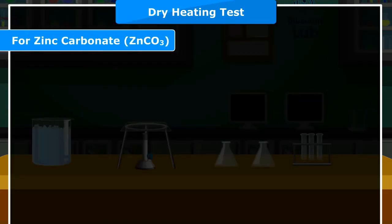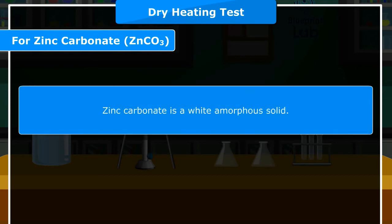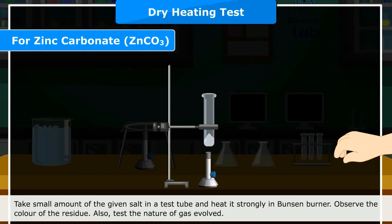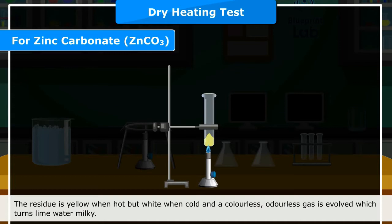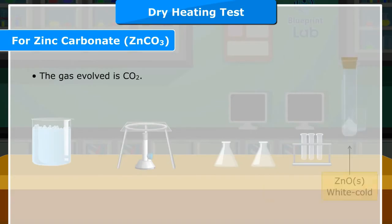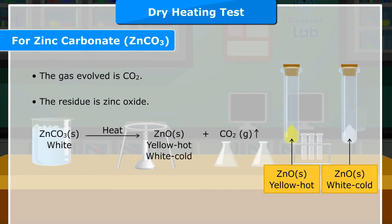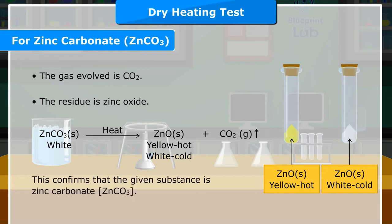For Zinc Carbonate (ZnCO3): Zinc carbonate is a white amorphous solid. Take a small amount of the given salt in a test tube and heat it strongly in a Bunsen burner. Observe the color of the residue and test the nature of gas evolved. The residue is yellow when hot but white when cold, and a colorless, odorless gas is evolved which turns lime water milky. The gas evolved is CO2. The residue is zinc oxide. ZnCO3 (solid, white) on heating gives ZnO (solid, yellow when hot / white when cold) + CO2 (gas). This confirms the given substance is zinc carbonate, ZnCO3.